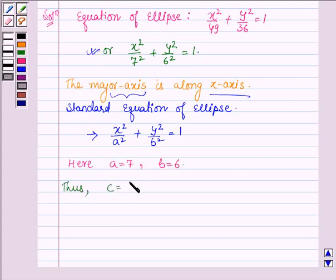Thus, c, which is given by √(a² - b²), equals √(49 - 36) = √13.